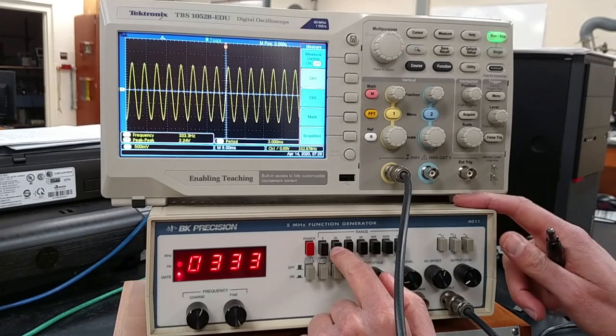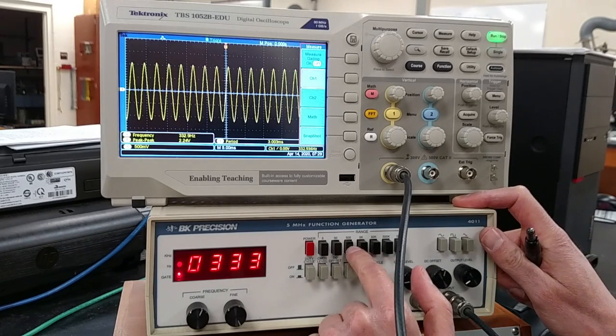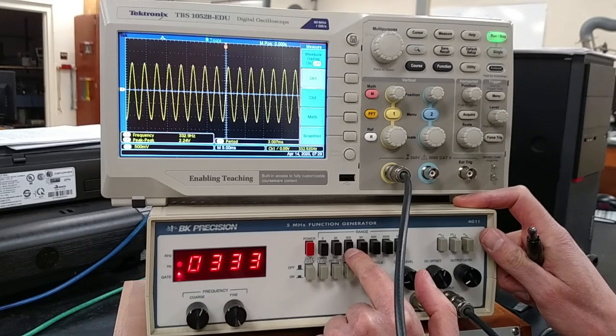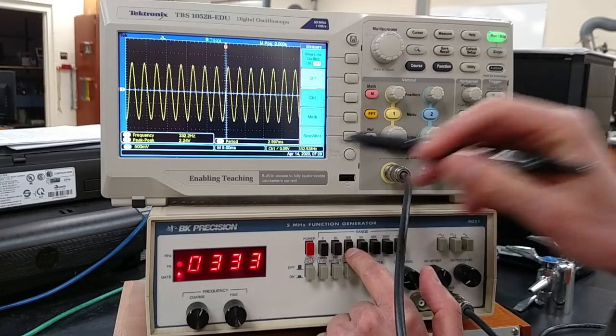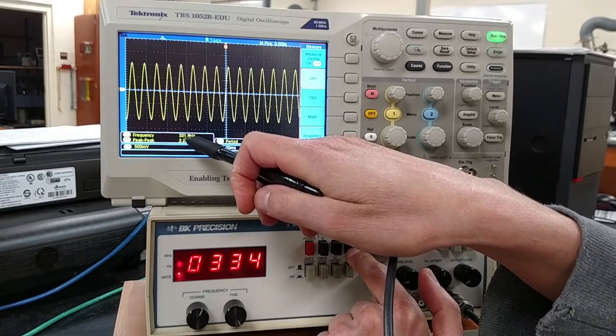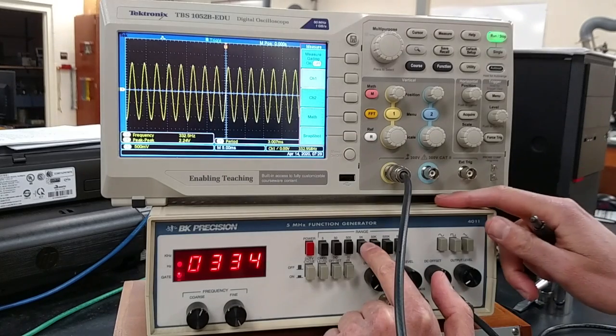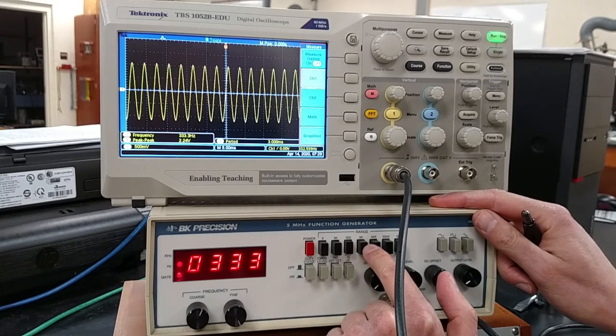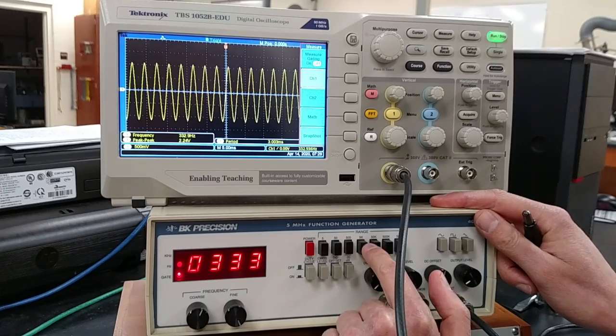Finally we can see what happens when we change the range. For example, we are now at the 500 hertz setting, the frequency is 331 hertz. So if we go to the 5k range that should multiply by 10 the frequency.